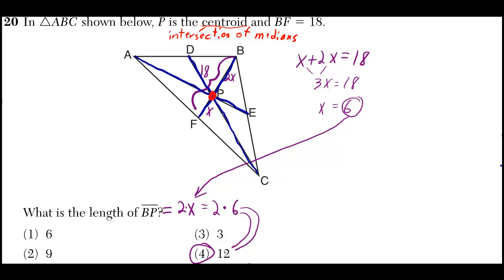And if x is equal to 6, if we want to know the length of BP, well that's only the 2x piece right there. Then all you have to do is plug in the x, and 2 times 6 is 12.